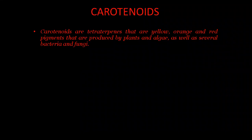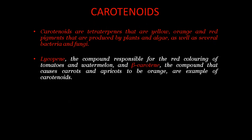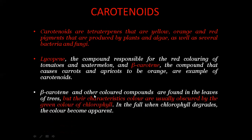Carotenoids are tetra-terpenes — yellow, orange, and red pigments produced by plants, algae, bacteria, and fungi. Lycopene is the compound responsible for the red coloring of tomatoes and watermelon, and beta-carotene causes carrots and apricots to be orange. These are examples of carotenoids, and in this video we will focus on beta-carotene.